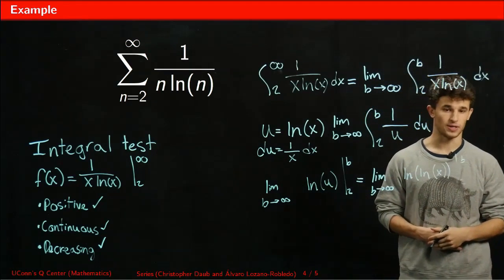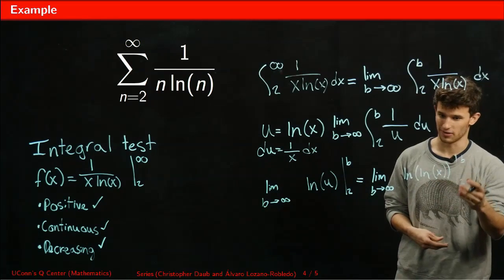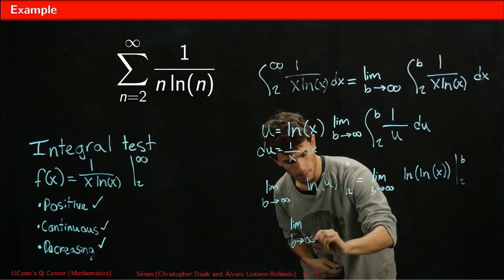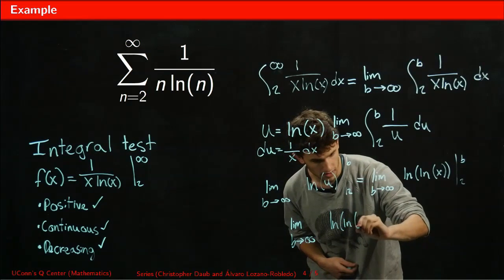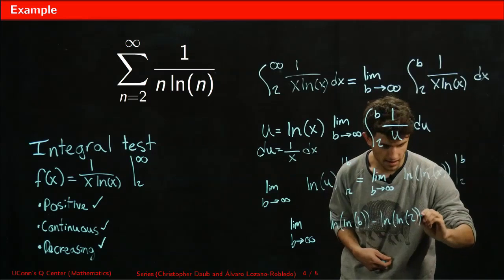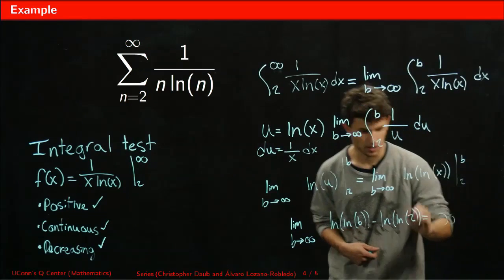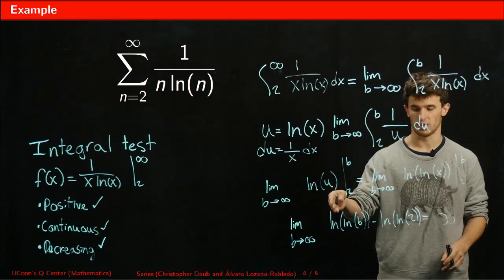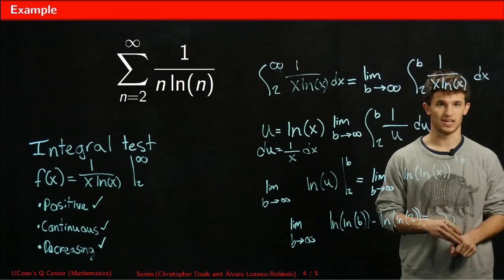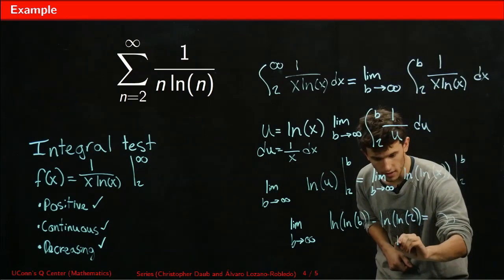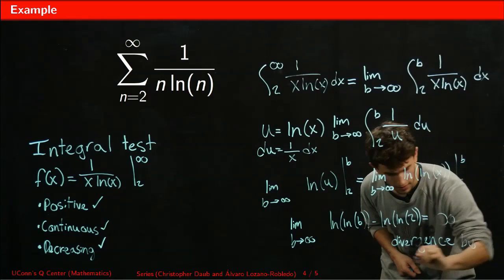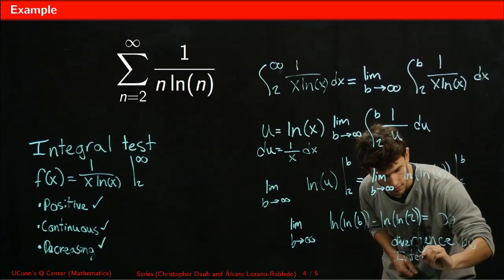Right now it looks like we're probably going to get this to diverge, but we still have to perform that final step, the subtraction. We have the limit as b goes to infinity of ln(ln(b)) minus ln(ln(2)) equals infinity. We know that because ln(ln(b)) is an increasing function. We plug in infinity, we get infinity, and ln(ln(2)) becomes insignificant. That's the integral test. We've now concluded divergence by integral test.